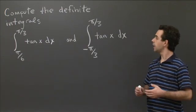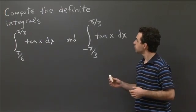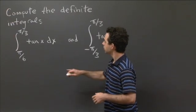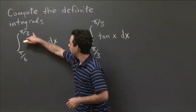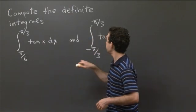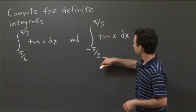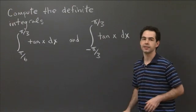So with that in mind, I've got a couple questions for you. Compute the definite integrals: the integral from pi over 6 to pi over 3 of tan x dx, and the integral of minus pi over 3 to pi over 3 of tan x dx.